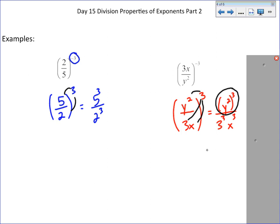y to the 2nd to the 3rd, this whole thing can be simplified down because it's the power of a power. Power of a power, you multiply, and you get y to the 6th. 3 to the 3rd is 27, and we're left with x to the 3rd.